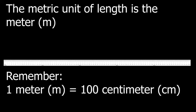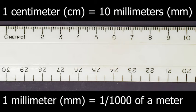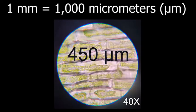Units of length. The metric unit of length is the meter. Remember, one meter is equal to a hundred centimeters. One centimeter is equal to ten millimeters. One millimeter is equal to a thousandth of a meter, and one millimeter is also a thousand micrometers used for microscopic structures.